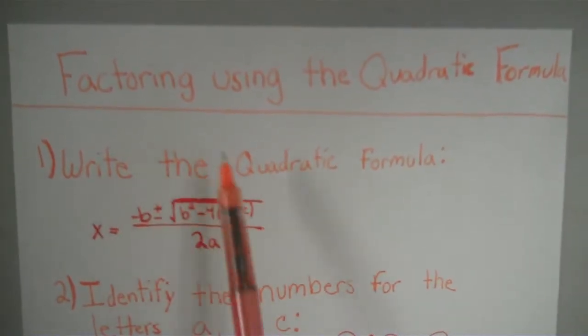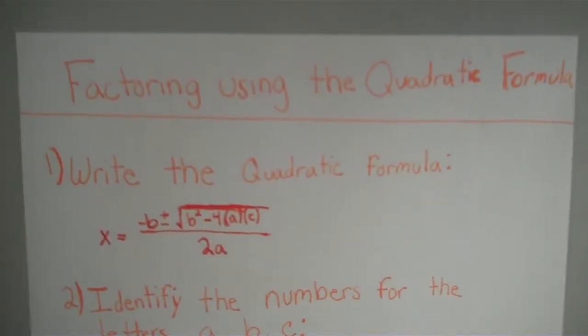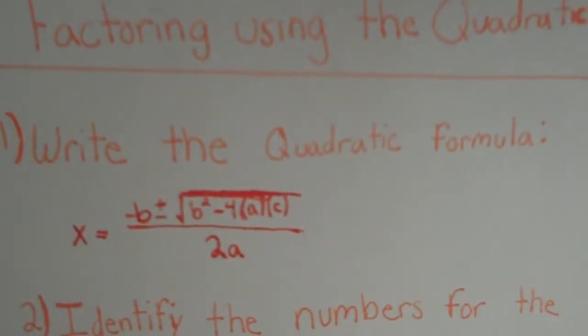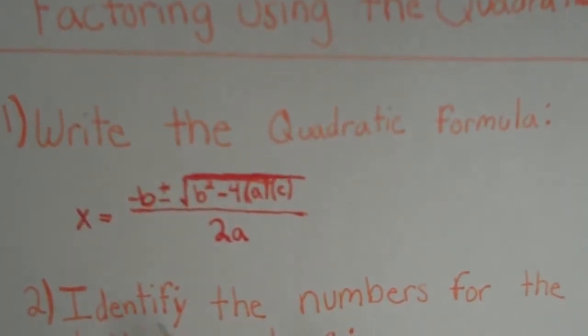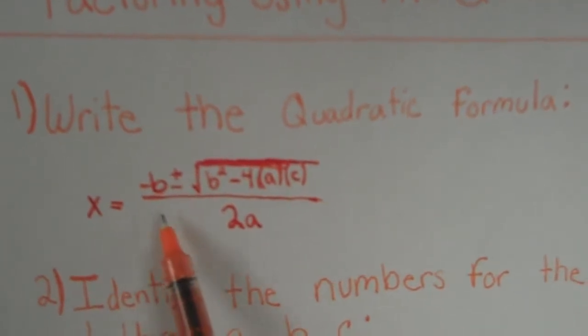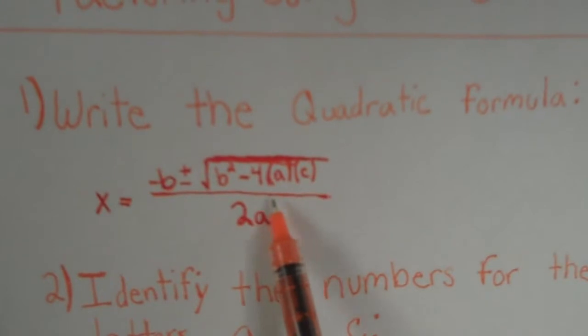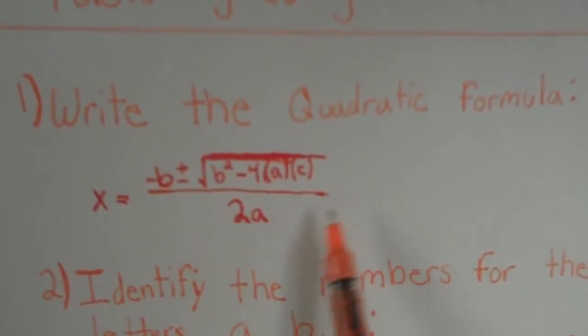My topic is factoring using the quadratic formula. First step is to write the quadratic formula. The formula for quadratic formula is x equals negative b plus or minus square root b squared minus 4 times a times c all over 2a.